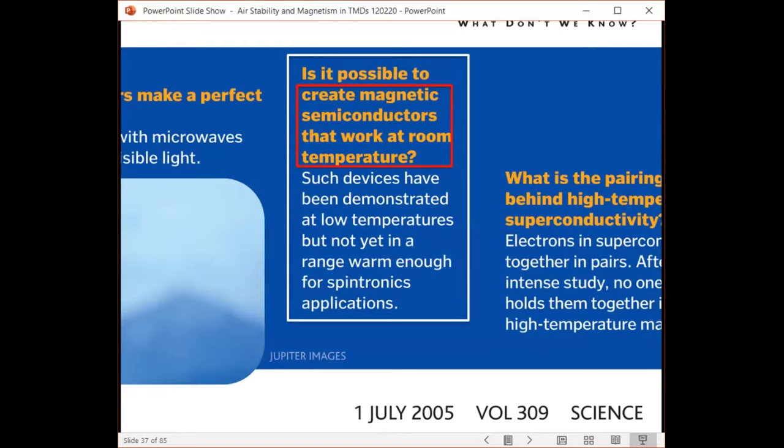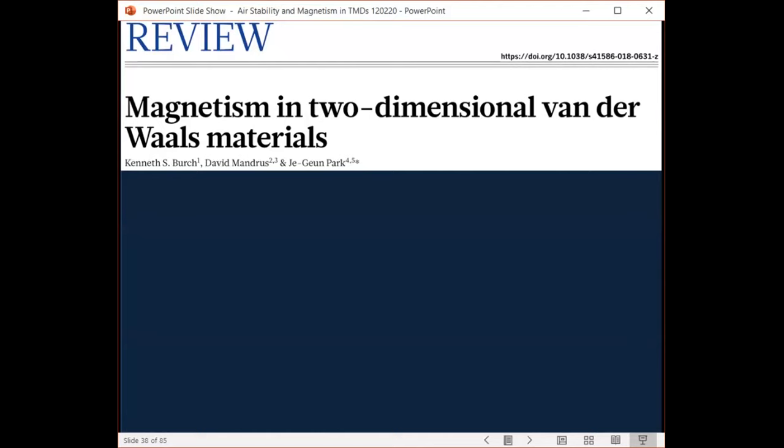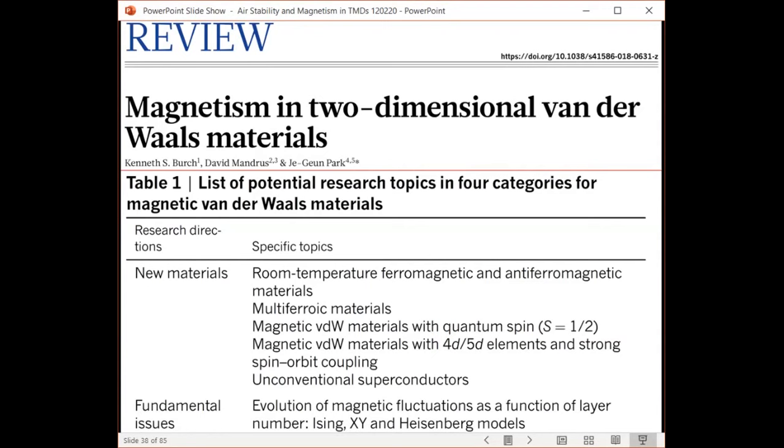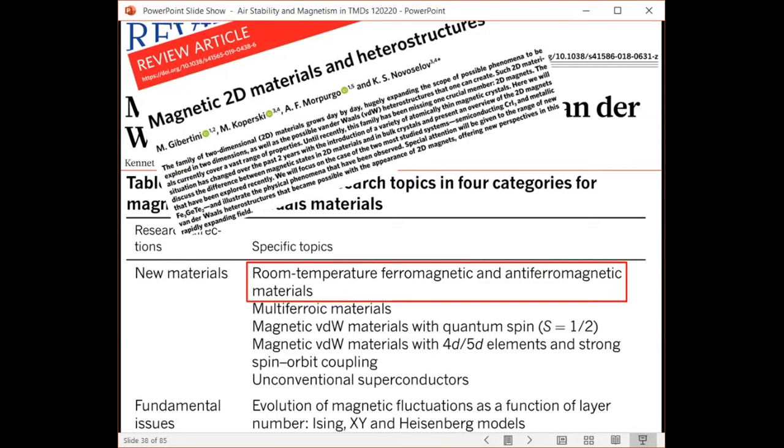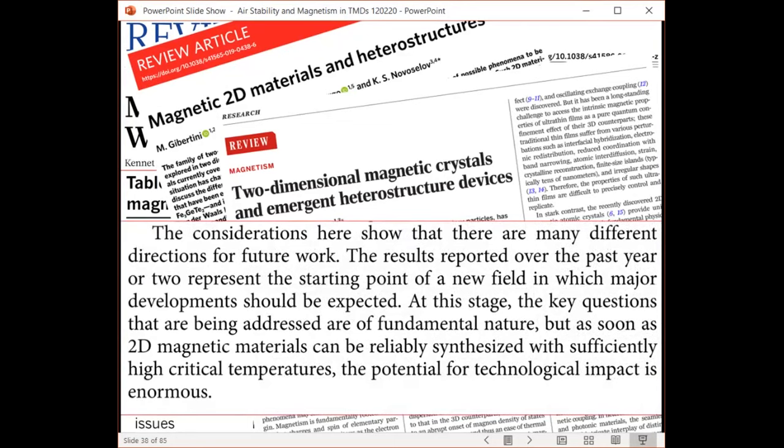So since the year 2018, there have been several review articles published in Nature Science and Advanced Materials about two-dimensional magnetic crystals and heterostructures. And one of the papers listed here potential research topics for magnetic van der Waals materials. And the first on the list was the room temperature ferromagnetic material, which we were working on. And another research review article, Nature Nanotechnology by Novoselov, this is co-authored with Science. All of these review articles mentioned that as soon as 2D magnets can be reliably synthesized with sufficiently high Curie temperature, the potential for technological impact is enormous. Here I want to pick two keywords. One is reliable synthesis and the other is high Curie temperature.